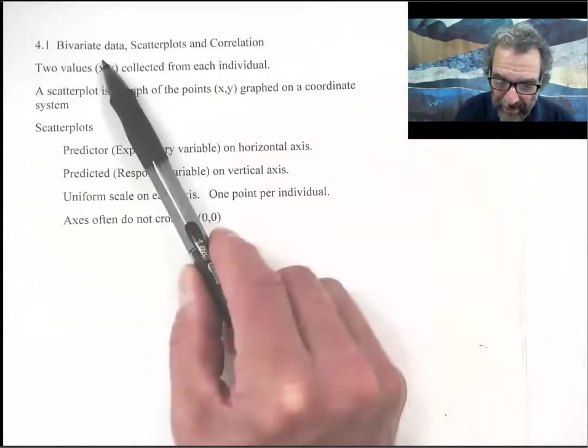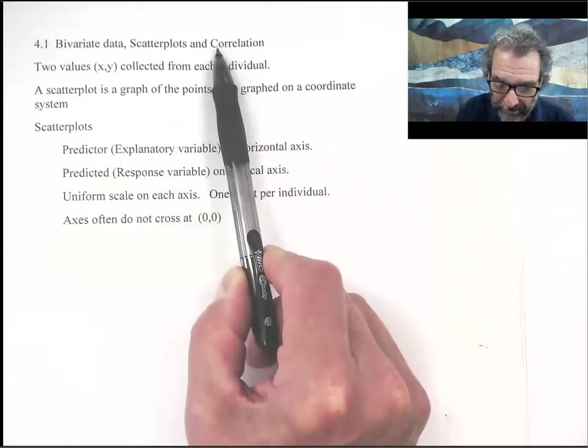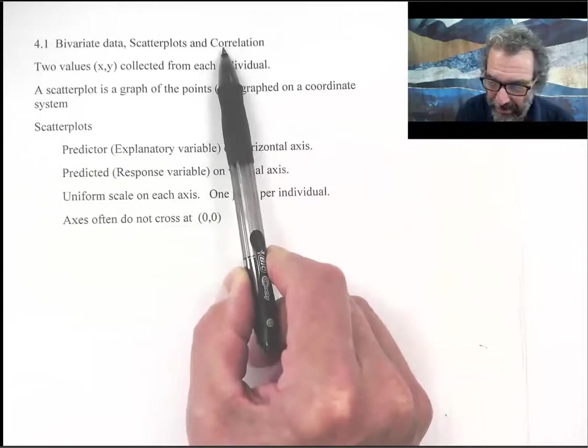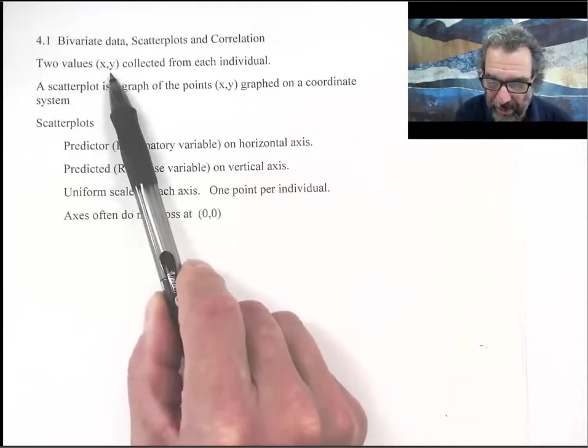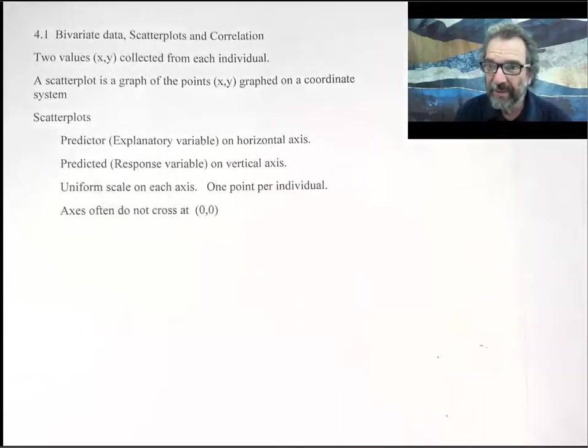Bivariate data scatter plots correlation. Two values usually listed as an ordered pair (x,y) are collected from each individual. A scatter plot is the graph of the points whose coordinates are (x,y) graphed on a coordinate system.